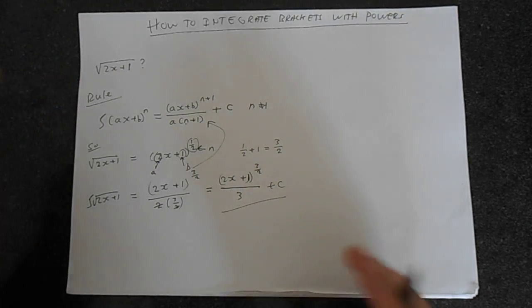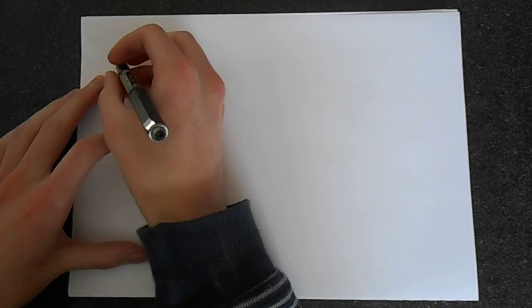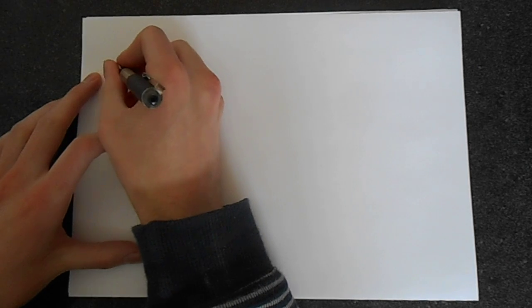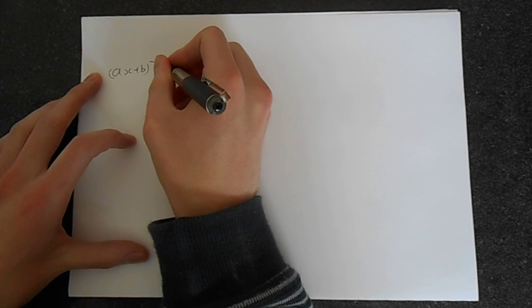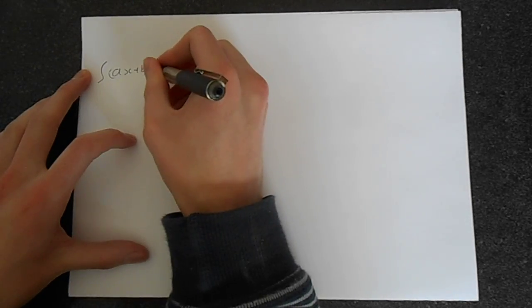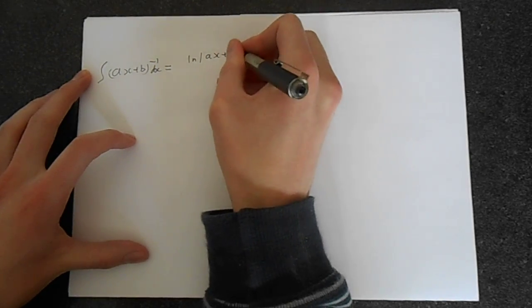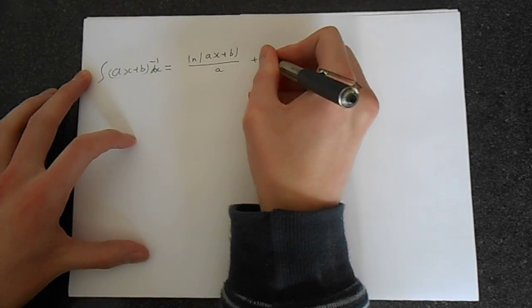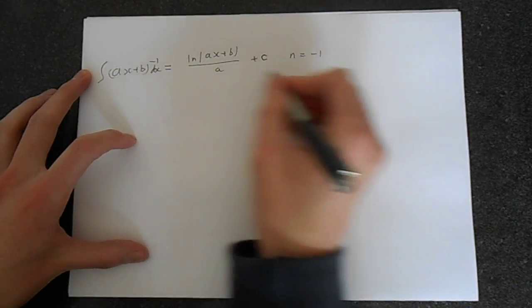So what do we do if n is equal to minus 1? Instead of that rule, we use a different rule: the integral of ax plus b to the power of minus 1 dx is equal to ln|ax plus b| over a, plus c. So when n is minus 1, you use this formula.